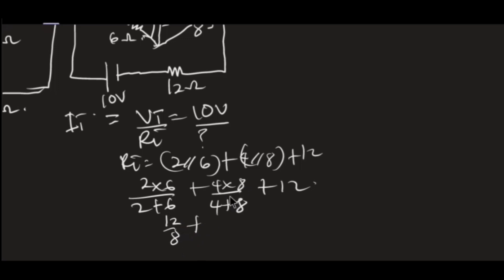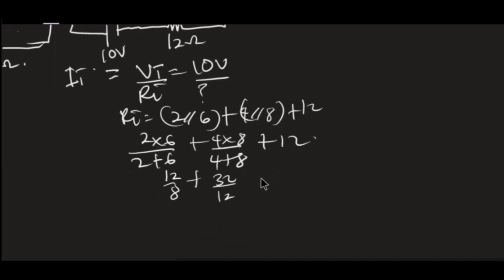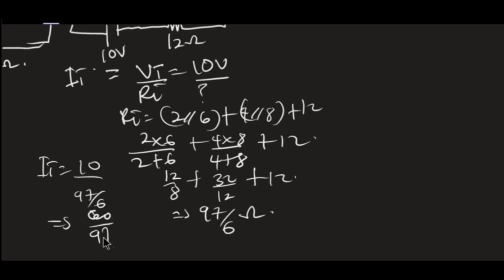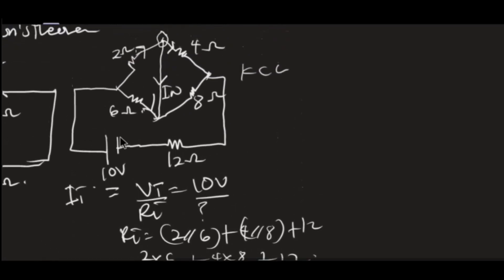Solving that: (12/8) + (32/12) + 12, which gives us R_T = 97/6 ohms. So the total resistance of the circuit is 97/6 ohms. To find the total current: I_T = 10 / (97/6) = 60/97 amperes. So 60/97 amperes is produced by the source, and upon reaching the node it splits into these two branches.